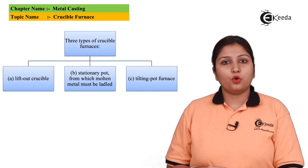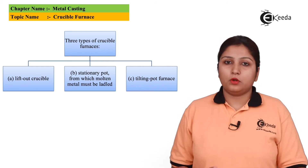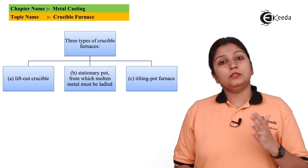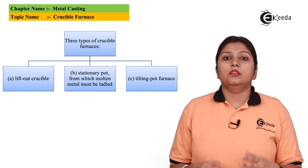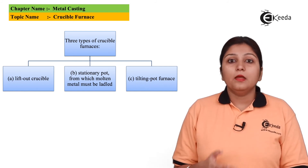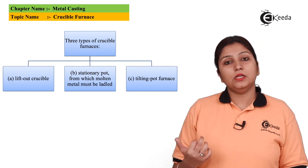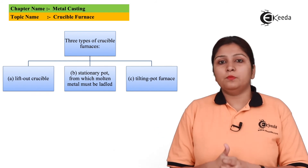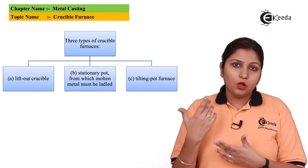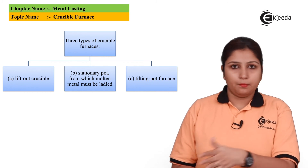Looking at these three types of crucible furnaces: in the first furnace, the heat supply is from the bottom side. After heating, the crucible can be lifted up and removed — that's why the name is 'lifting.' In the second furnace, the crucible is stationary and the metal has to be removed by other means — that's why the name is 'stationary.' In the third type, the crucible can be tilted; a wheel is provided so that tilting can be done easily — that's why the name is 'tilting.' So these are the three types of crucible furnaces used for indirect heating of the metal.